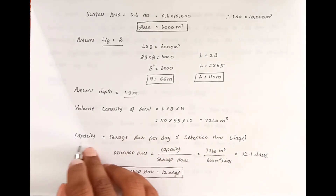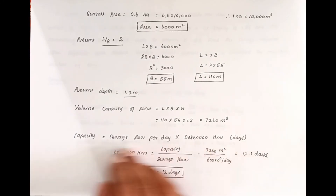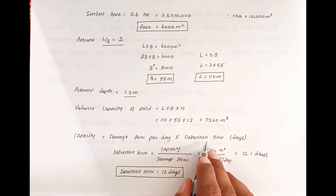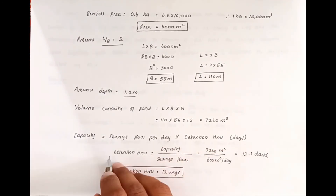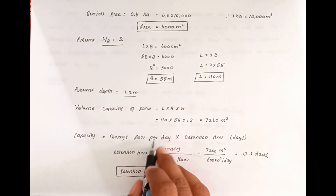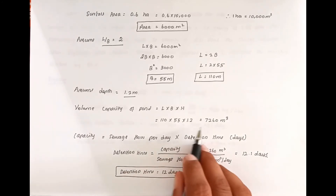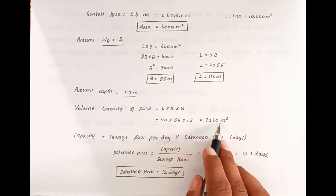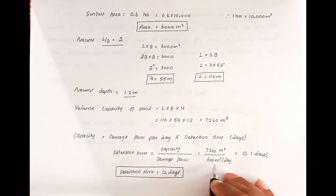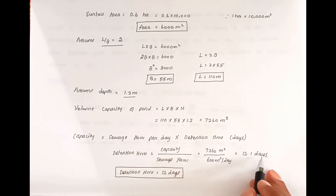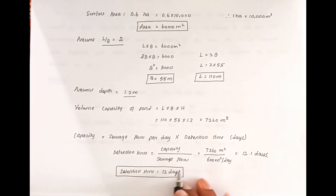Next, we calculate the detention period. Capacity equals sewage flow per day multiplied by detention time. So detention period equals capacity divided by sewage flow per day: 7260 m³ divided by 600 m³ per day equals approximately 12.1 days. Therefore, the detention period is 12 days.